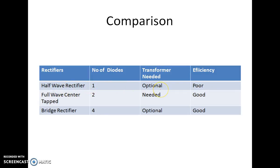The transformer which is connected can be optional and the efficiency is very poor. We say this because only half of the cycle is coming at the output.